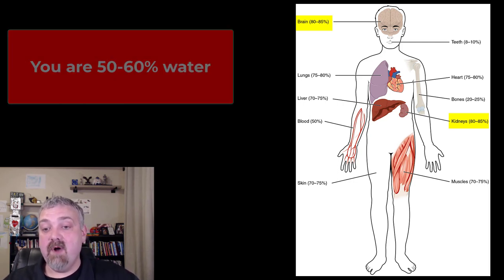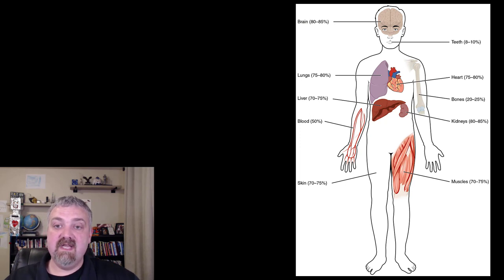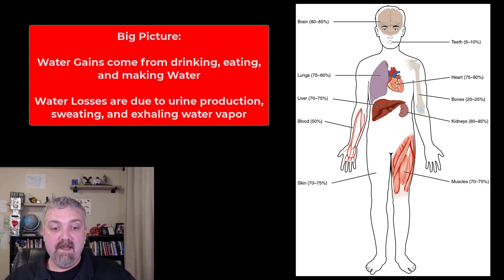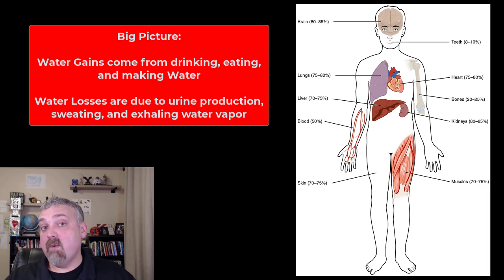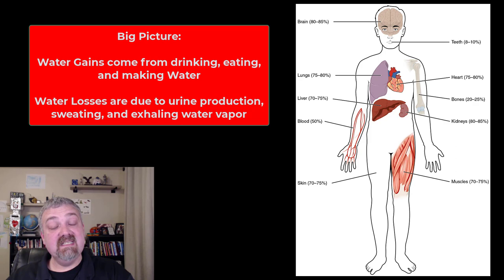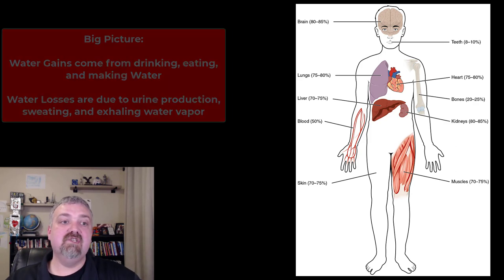So how do you keep all this water in your body? You balance your gains with your losses. Simply put, you drink water, eat water, and you make water — your metabolism generates about a cup of water a day. How do you lose it? You urinate, you sweat it out, and you breathe it out. And of course feces will lose some water, hopefully not too much.